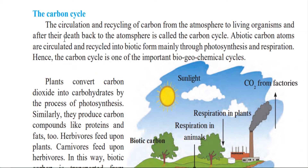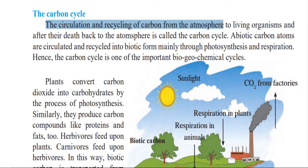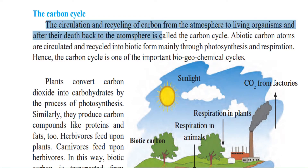We just learnt about the biogeochemical cycle. So now let's read about the carbon cycle within this biogeochemical cycle. The circulation and recycling of carbon from the atmosphere to the living organisms and after their death back to the atmosphere is called the carbon cycle. Abiotic carbon atoms are circulated and recycled into biotic form mainly through photosynthesis and respiration. Hence the carbon cycle is one of the important biogeochemical cycles.